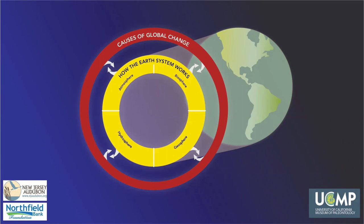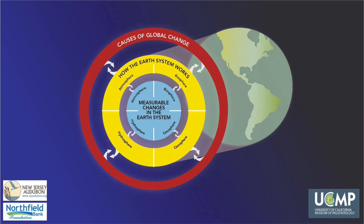You've now been introduced to the processes that are essential to how the Earth's systems work. To understand causes of global change, we'll turn our attention to the non-human causes and human activities that influence the Earth's system, and then explore how we can measure the Earth's system to determine how fast and how much the Earth is changing. First, we'll examine the non-human causes of change.